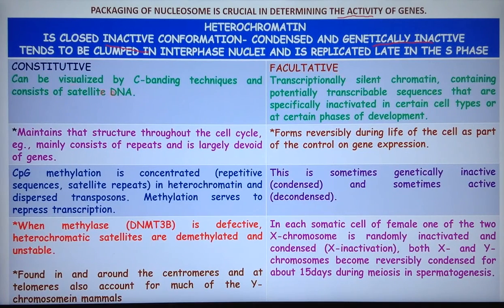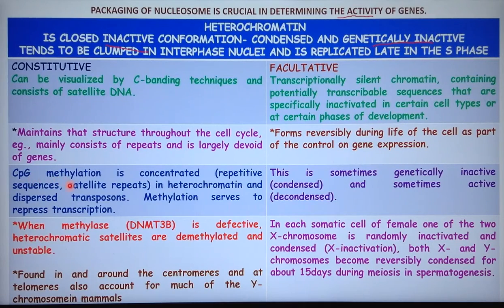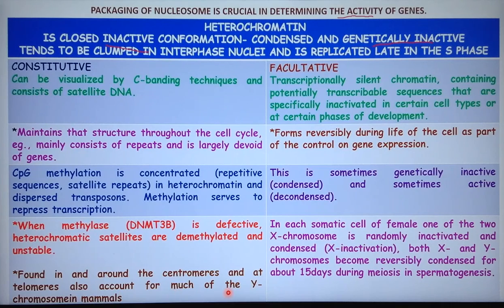Heterochromatin is of two kinds: constitutive and facultative. Constitutive heterochromatin is silent throughout the cell cycle, can be visualized by C-banding technique, consists of satellite DNA, and is largely devoid of genes. CpG methylation is concentrated at repetitive sequences, satellite repeats, and dispersed transposons, and methylation serves to repress transcription. When the methylase DNMT3B is defective, heterochromatic satellites are demethylated and unstable. Constitutive heterochromatin is found around the centromere, at the telomere, and accounts for much of the Y chromosome in mammals.